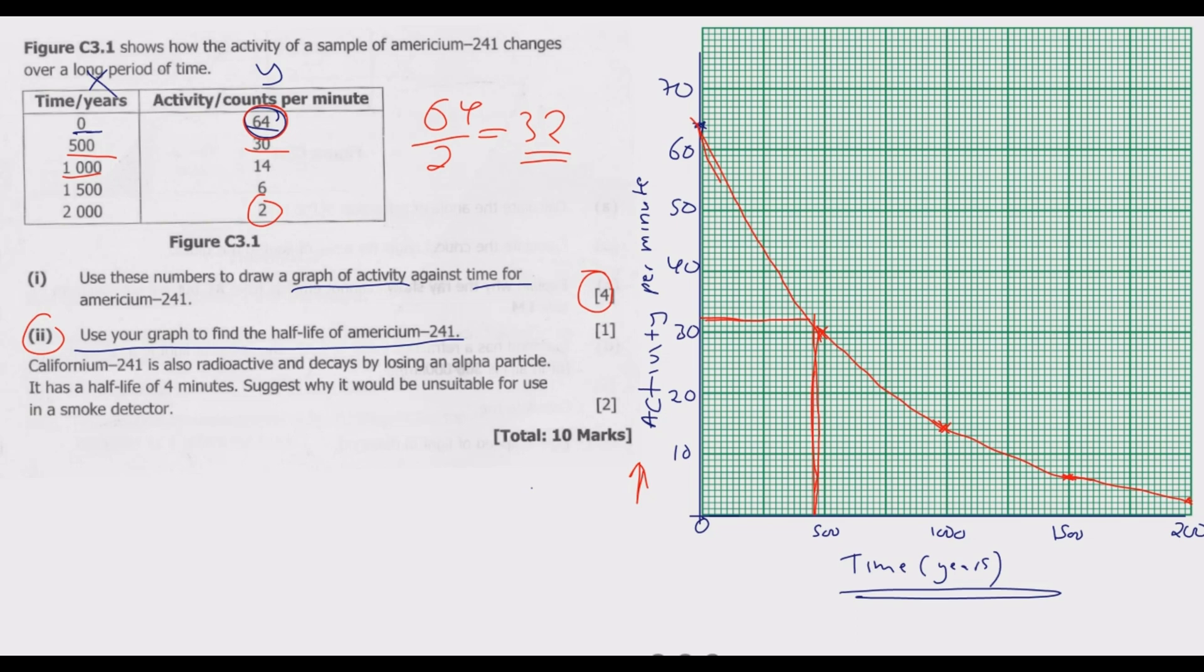Then bring this line down to the x-axis. This line is somewhere between marks. Each subunit represents 250 divided by 10, which is 25 years. Where we are is almost halfway before 500, so 500 minus 25 equals 475. So 475 years is the half-life of this material.